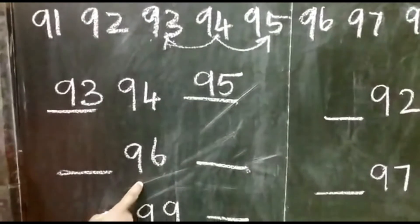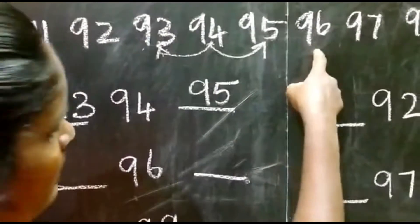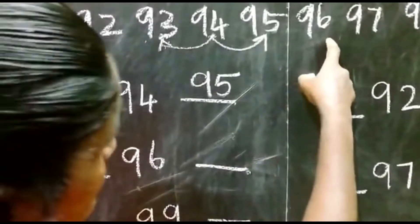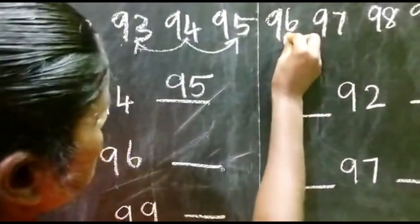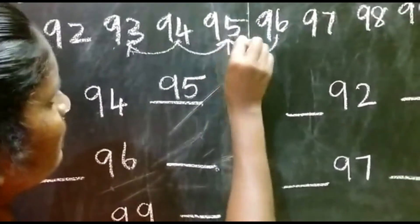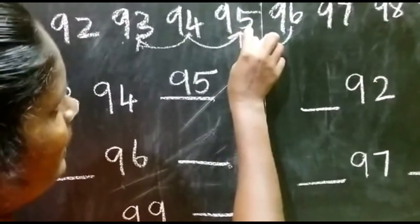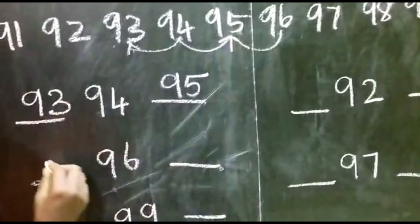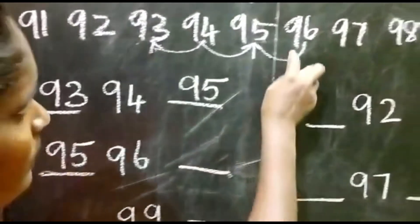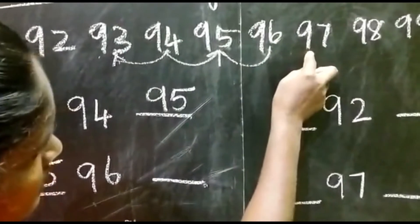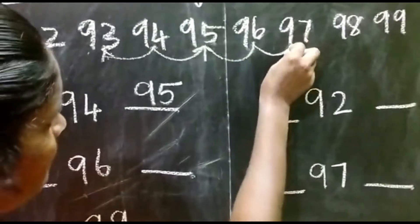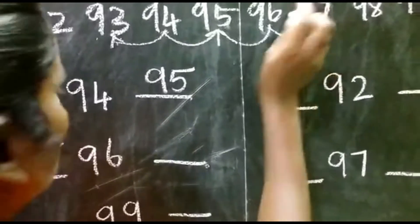Then the second number is 96. Before number of 96 is 95. Now 96 after number is 97.